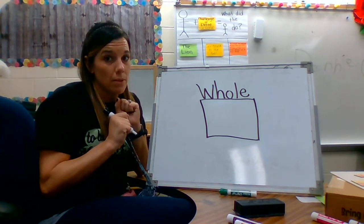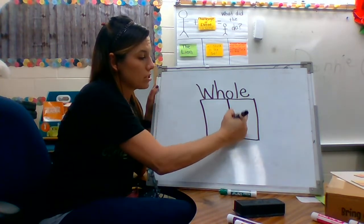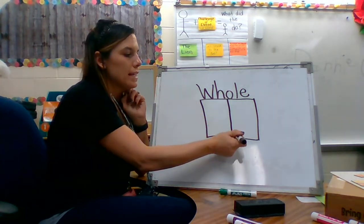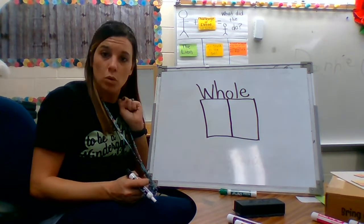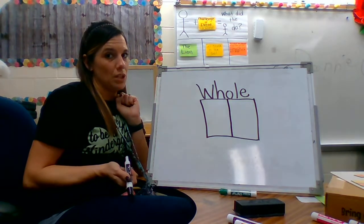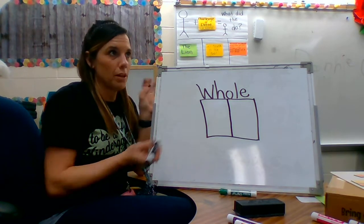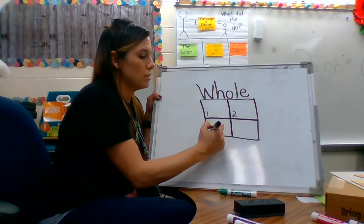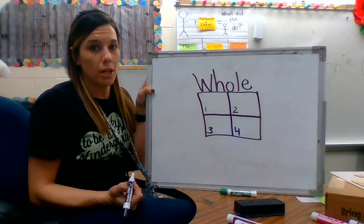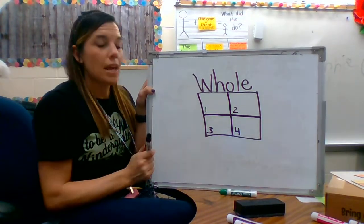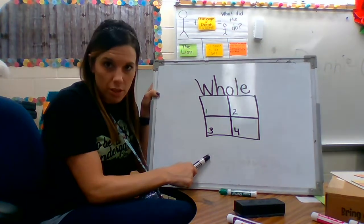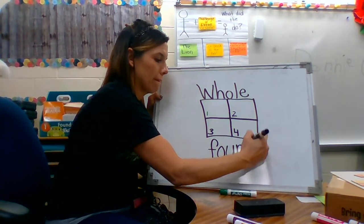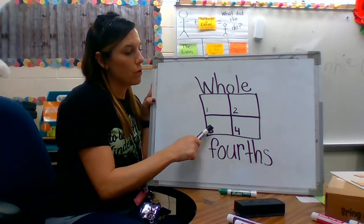I know that if I draw one line down the middle, I'm going to have two equal parts — halves. So if one line down the middle gives me two equal parts, two plus two is four, so if I drew a second line down the middle, is that going to give me four equal parts? Let's try it. Do I have four equal parts? One, two, three, four — I have four equal parts. Since I have four parts, this square is divided into fourths. Fourths means four equal parts.